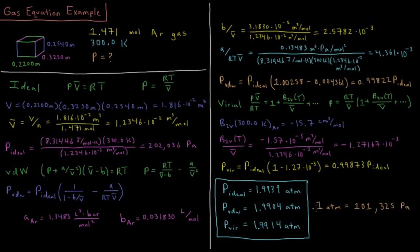So knowing that one atmosphere is 101,325 pascals, knowing that my ideal pressure was 202,036 pascals, and knowing what these ratios are, I can convert all of these pressures into atmospheres. My final result is my ideal pressure is 1.9939 atmospheres, the Van der Waals pressure was 1.9904 atmospheres, and the virial pressure was 1.9914 atmospheres.